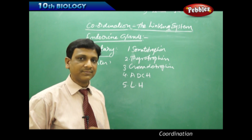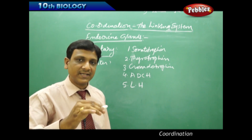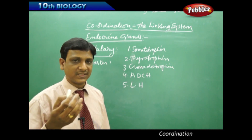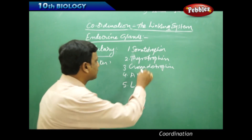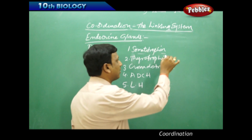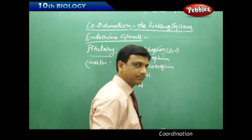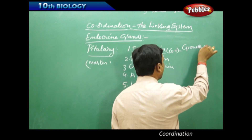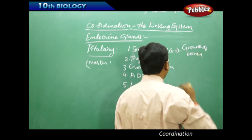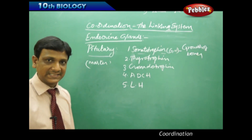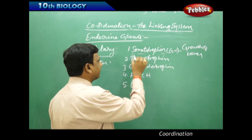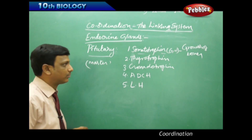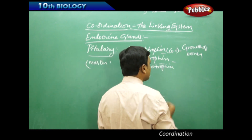Some secretions of the pituitary directly show their effect on body parts, while certain hormones control other glands. The first one is somatotrophin, also called GH or growth hormone. This growth hormone controls the growth of bones, and it needs to be secreted well to achieve good height. The growth of our bones is under the control of somatotrophin, secreted by the pituitary gland.